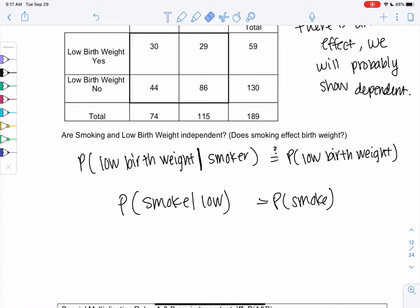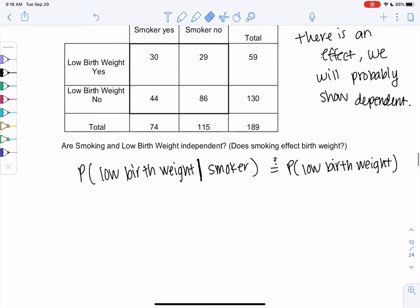But just in everyday language, it's a little confusing. So what I'm doing here is, what's the chance that a baby has a low birth weight versus what's the probability that a baby has a low birth weight if the mom's a smoker? So let's do one at a time. Let's do low birth weight given smoker.